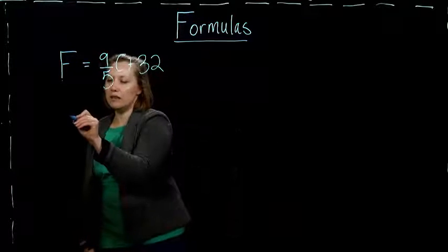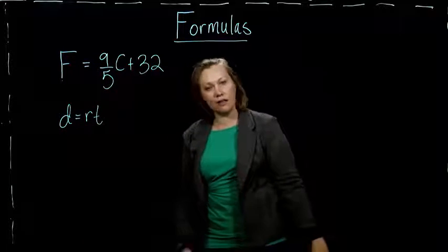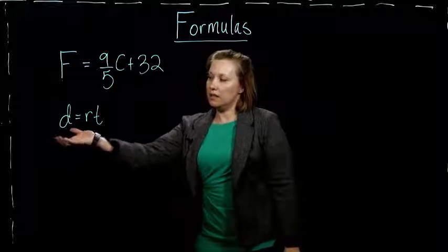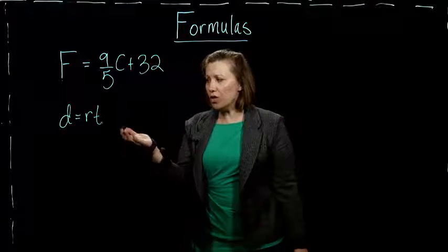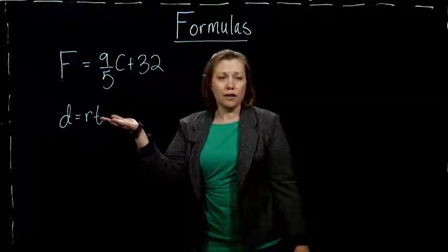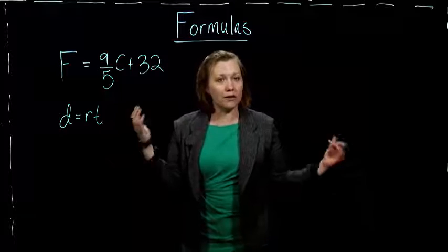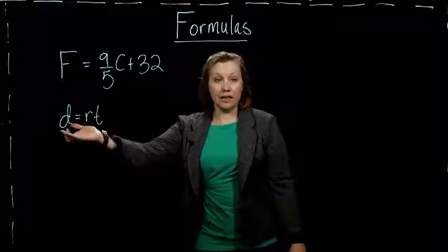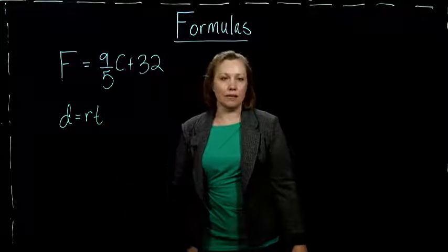Another one you might see in some of your other classes, and you probably use it in your everyday life and don't even know you do, is for distance. Distance equals rate times time. So if you're going to travel two hours in your car at 70 miles per hour, you would go 140 miles after two hours. So that is distance equals rate times time, where we use the D to represent the distance, the R to represent the rate, and the T to represent the time.